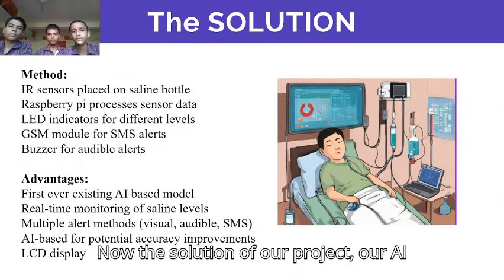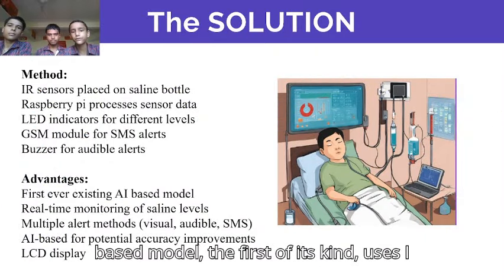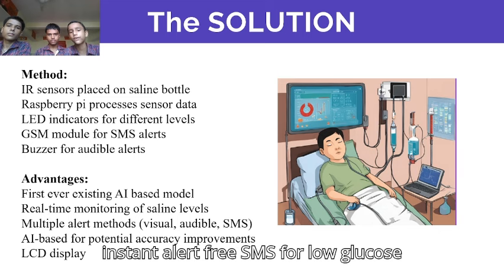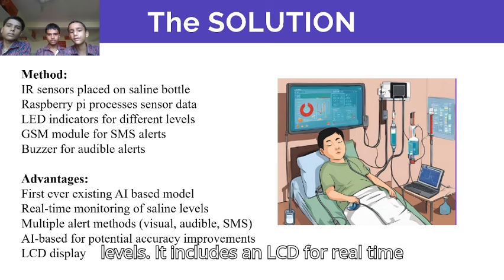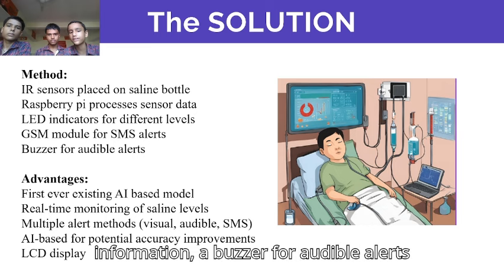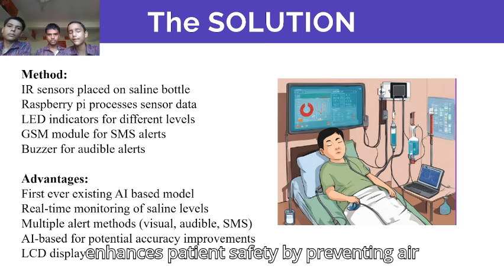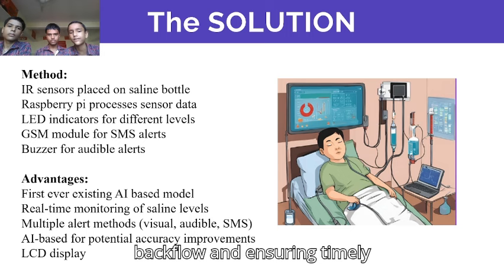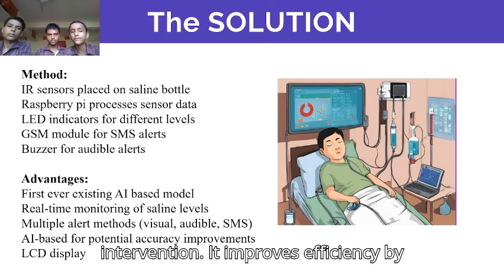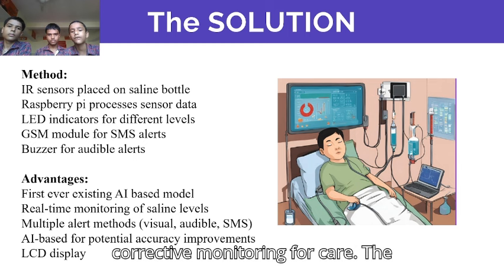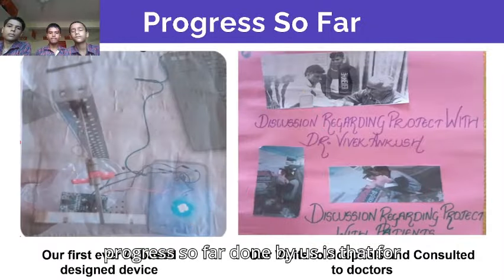Our AI-based model, the first of its kind, uses an IR sensor and a GSM module to provide instant SMS alerts for low glucose levels. It includes an LCD for real-time information and a buzzer for audible alerts, reducing manual checks. This system enhances patient safety by preventing air backflow and ensuring timely intervention. It improves efficiency by alleviating staff workload and offers proactive monitoring for better care.